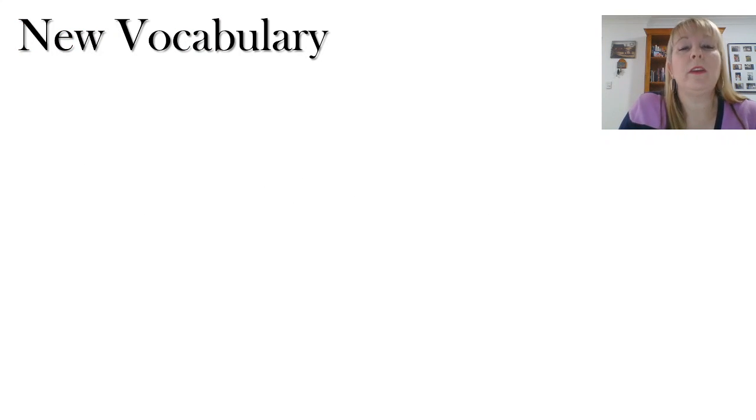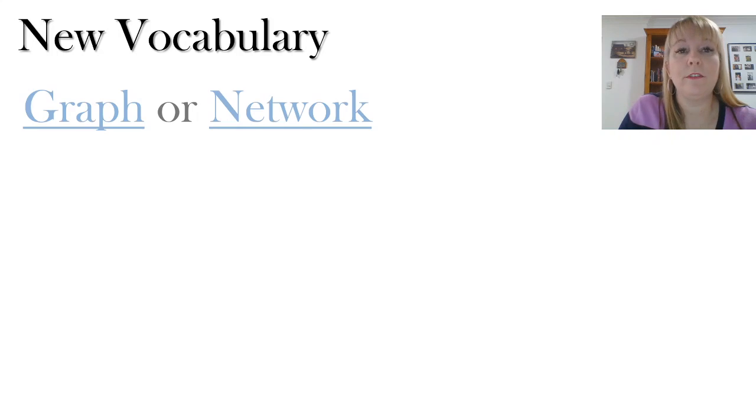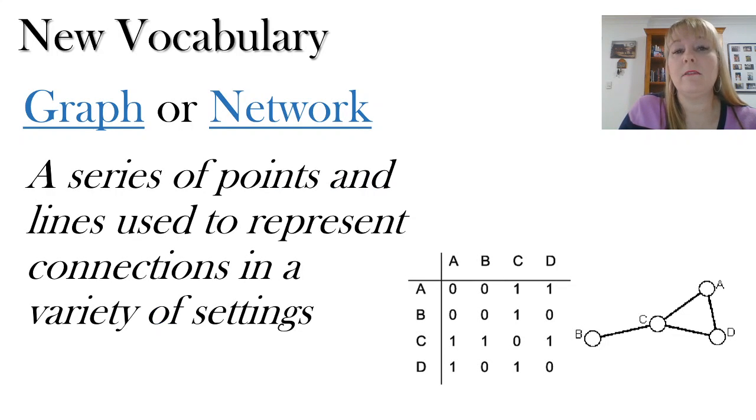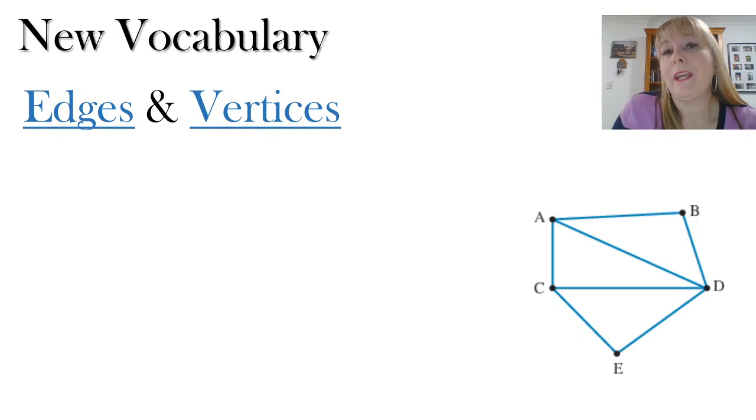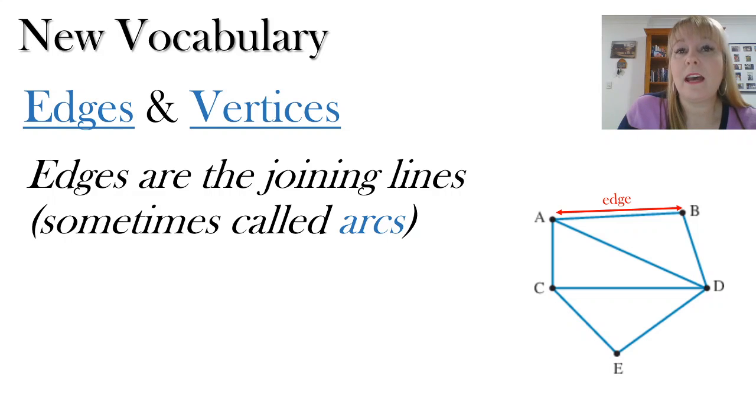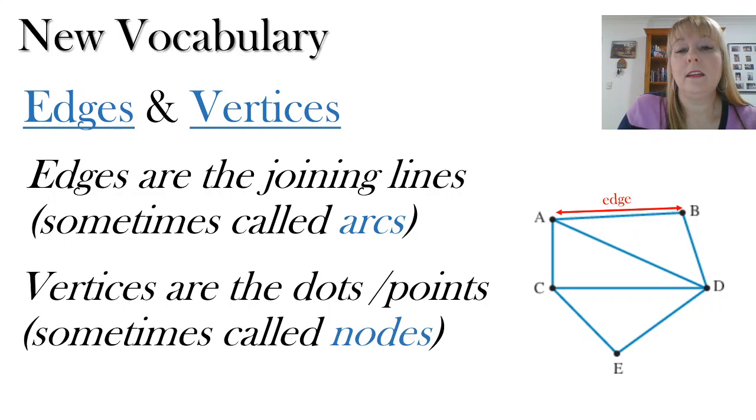So now I'm going to introduce you to some new vocabulary around graphs and networks for year 12. Firstly, we've got something called a graph or a network. And that's a series of points and lines that we use to represent those connections in a number of different settings. It might not just be towns and roads, but all sorts of different ways of connecting things together. So the graph is shown on the right and the matrix is shown on the left. We've got things called edges and vertices. Now, the edges are the joining lines between the two points. And we can also call those arcs. It really depends on what textbook you're using. So that's an edge. And a vertice is also called a node. And they are the dots or the points that represent the different items that are being connected to one another. So here's an example of a vertex. We've got five vertices on this particular graph.